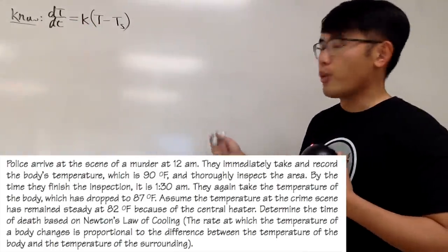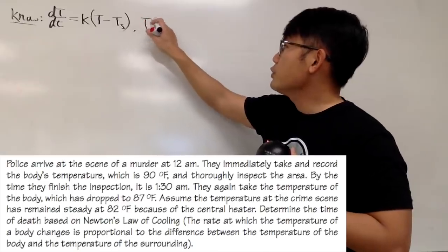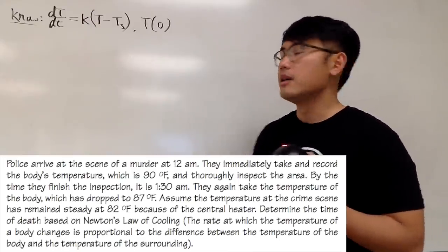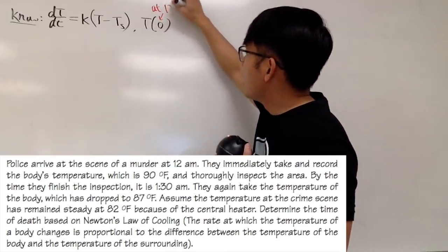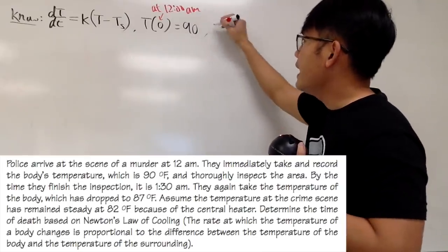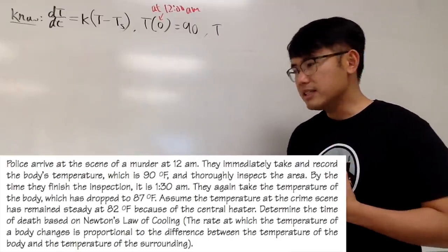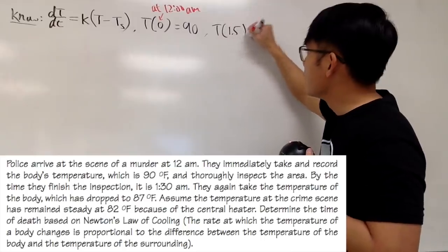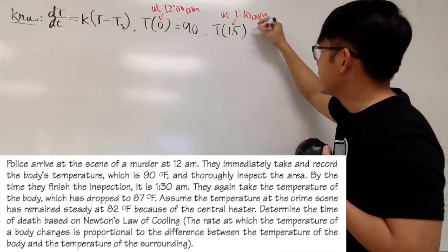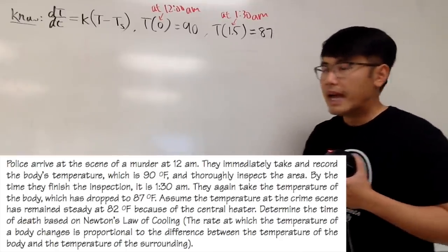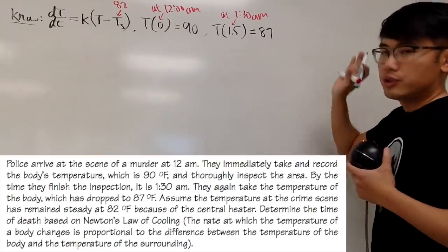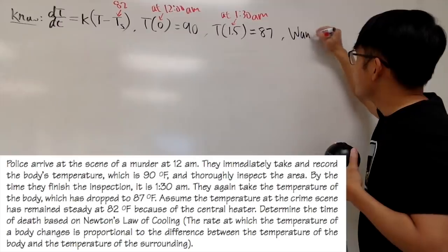This is the differential equation, and now we are going to write down our initial conditions. First one: T(0) is the initial temperature — the temperature of the body when we find it at 12 o'clock a.m. — and it was 90 degrees Fahrenheit. Then we waited an hour and 30 minutes, and T(1.5) represents 1:30 a.m. The temperature of the body had dropped to 87 degrees Fahrenheit, and the surrounding temperature was assumed to be constant at 82 degrees Fahrenheit.